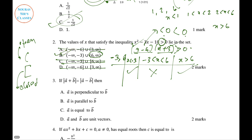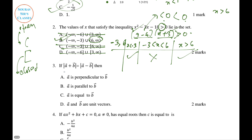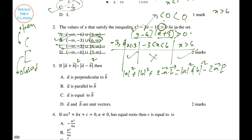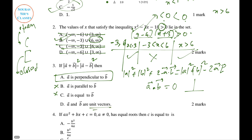Question 3: Given |a + b| equals |a minus b| for vectors, squaring both sides gives a² + 2ab + b² = a² minus 2ab + b². The 2ab terms cancel, leaving the dot product equal to zero. If the dot product of two vectors is zero, they are perpendicular to each other. So a is perpendicular to b — not parallel, not equal, and not unit vectors.